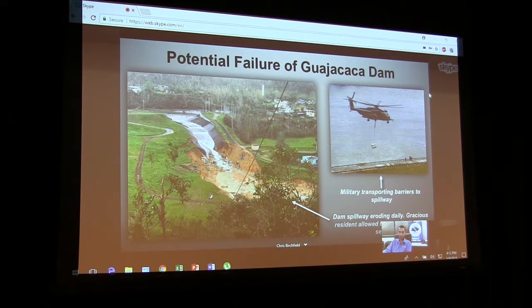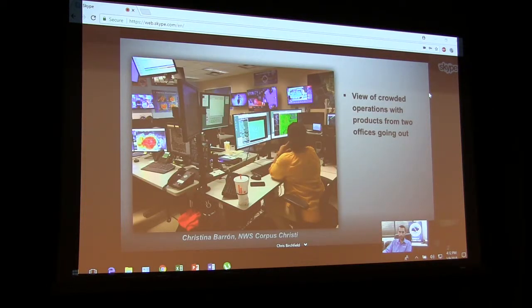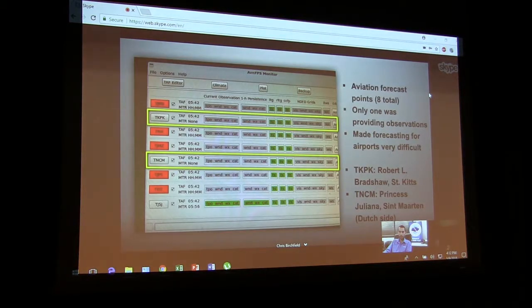Here's a picture of operations from Miami. This is a picture of Christina from the NWS Corpus Christi office. She was one of the three also deployed. My workstation was over here, and then the background was Miami's forecast office. We were basically sharing operations as we were sending out products for two different offices here. Here's a picture of the aviation forecast points, eight in total. As you can see in green, that was the only one operating, and that was actually manual observations by those on the ground. The ones I highlighted here in yellow, those are two of the sites that are actually outside of the U.S. on the island of St. Kitts and St. Martin on the Dutch side, which was practically destroyed after Irma.